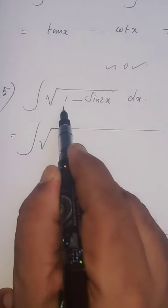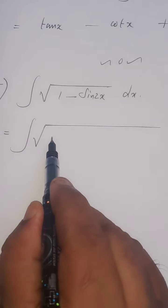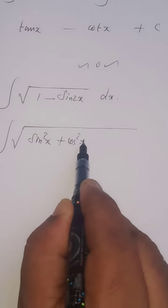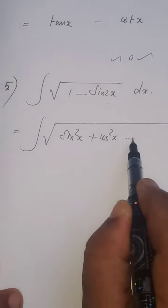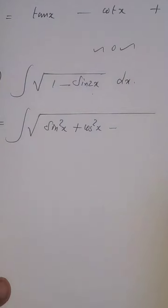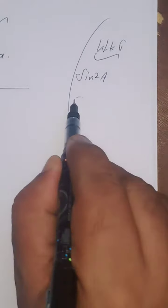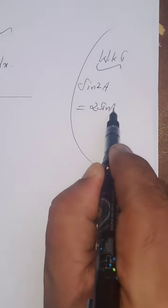That 1 can be replaced by sin squared x plus cos squared x minus sin 2x. We know the formula for sin 2a, that is equal to 2 sin a cos a, so sin 2x equals 2 sin x cos x.